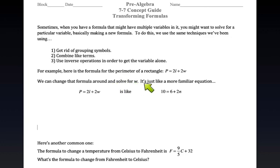All right, so what if you want to change the formula around to have a new formula for W? It's just like a more familiar equation like this where it says 10 equals 6 plus 2N. So check this out: how do we solve for N? Well, I would subtract 6 from both sides, right, the furthest away from N. So now I get 10 minus 6 equals 2N.